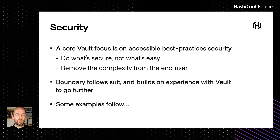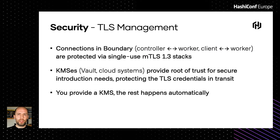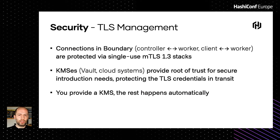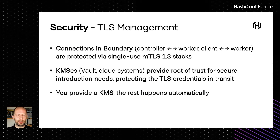For security, a core Vault focus is accessible best-practice security — doing what's secure and not just what's easy, while removing a lot of the complexity of being secure from the end user. Boundary follows suit, building on our Vault experience to go further. For TLS management, connections between the various components — controller, worker, and client — are protected via single-use, mutual TLS authenticated TLS 1.3 stacks. This significantly reduces both the ease of compromise and the risk of exposure if compromise occurs. We use key management systems — which can be Vault or cloud systems like AWS KMS, GCP CKMS, or Azure Key Vault — to provide the root of trust for secure introduction and to protect TLS credentials. But to make it easy, we do all that for you. You just have to provide a KMS, and that's it.